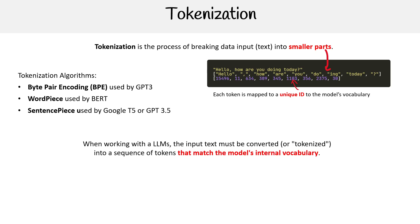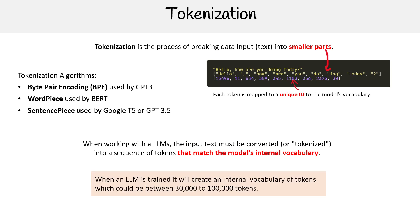When you're working with LLMs, the input text must be converted or tokenized into a sequence of tokens that match the model's internal vocabulary. When an LLM is trained, it creates an internal vocabulary of tokens of all the stuff that it knows — because if you consume the world's knowledge, you want to take all that text, break it down into all its unique components — tokens — and then assign a value to each one.